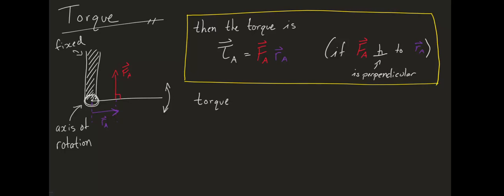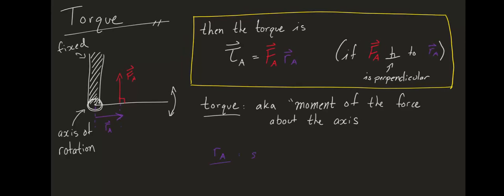Some useful vocabulary is this. Torque is also known as the moment of the force about the axis. And RA is sometimes called the lever arm or the moment arm.